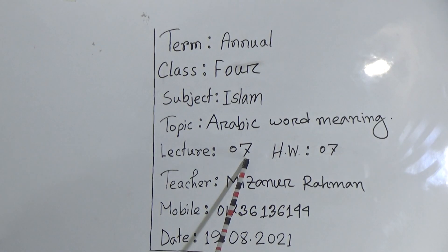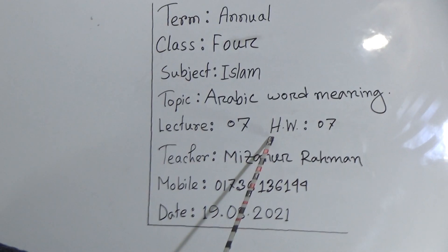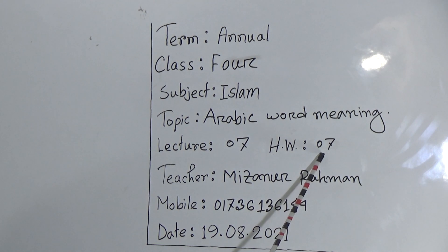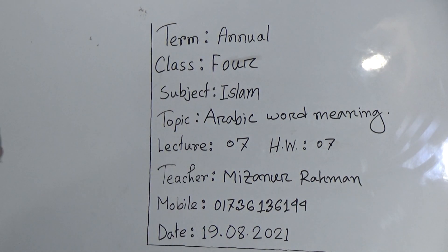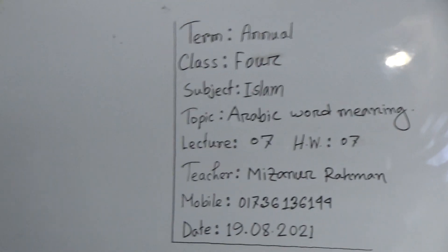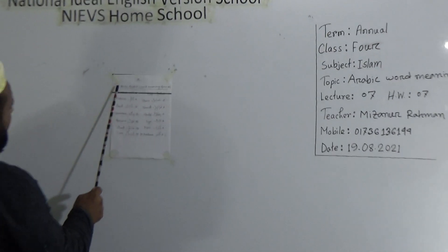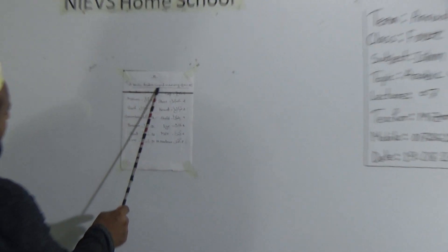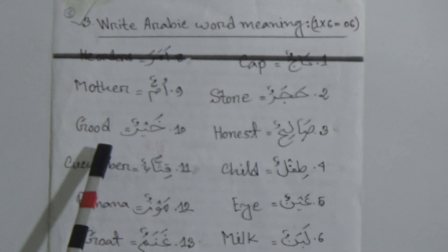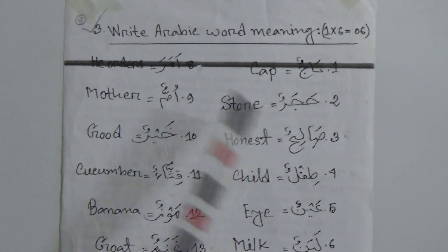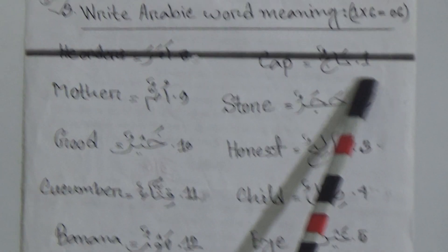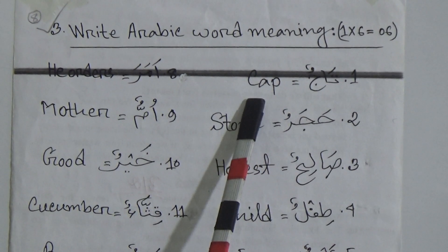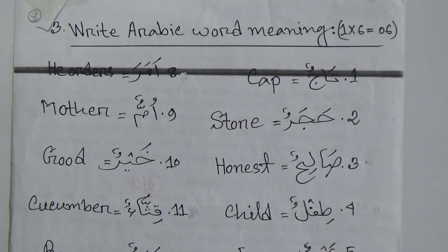Today's lecture number 7, and I'll give an assignment which will also be number 7, term annual. Okay dear students, let's come to the board and listen. Write Arabic word meaning. First number: the Arabic word meaning is Tajun. Tajun means cap.